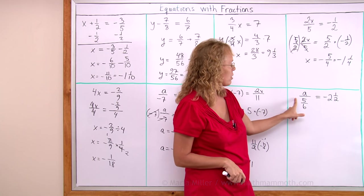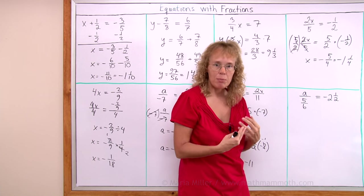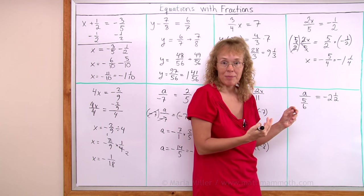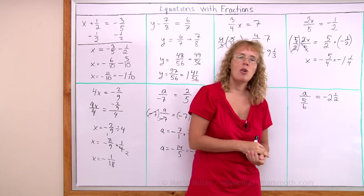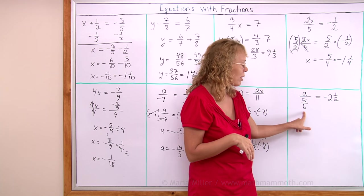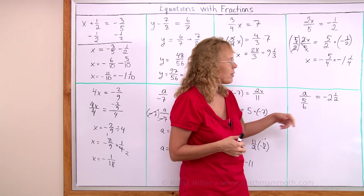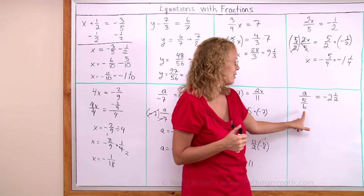Lastly, a over 5 sixths or a divided by 5 sixths. Here's a variable divided by something, it's a division equation. So we would multiply by 5 sixths to solve the equation. Now you don't normally see it written this way, normally you would see 6a over 5, but I chose it as an example of a complex fraction here.